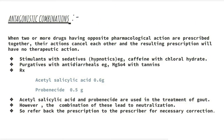Moving on to antagonism: when two or more drugs having opposite pharmacological actions are prescribed together, their actions cancel each other and the resulting prescription has no therapeutic action. For example, acetyl salicylic acid (aspirin) and probenicid are both used in the treatment of gout. However, aspirin blocks the action of probenicid, making this an antagonistic combination that should not be given together.